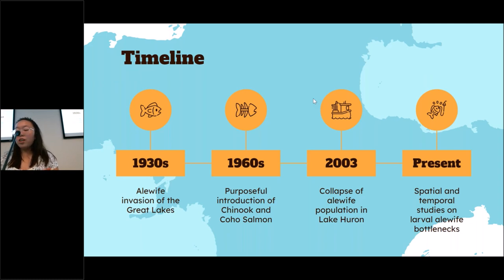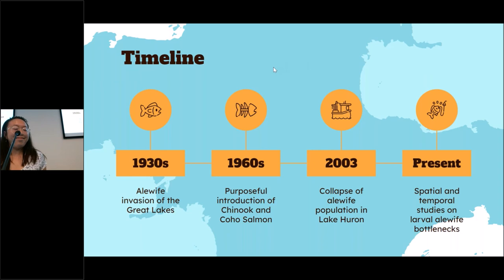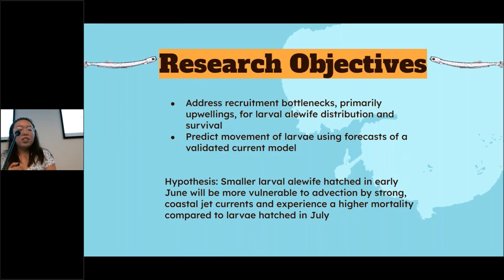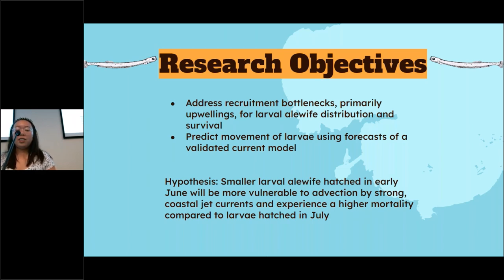Right now we're trying to study what affects alewife recruitment. From what we've seen, there are three main modes of mortality: predation, starvation, and upwellings. My research objective is to address the recruitment bottlenecks — primarily upwellings — for larval alewife distribution and survival, and then try to predict larvae using forecasts of a validated current model. Our hypothesis is that smaller alewife hatched in early June will be more vulnerable to these advections and upwellings by strong currents and experience higher mortality compared to larvae hatched in July.